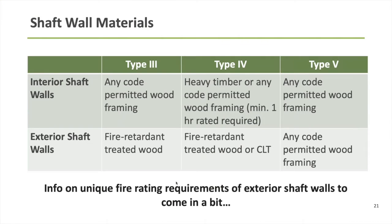There are a few nuances in the building code when it comes to exterior walls that are also shaft walls — think a hotel building where stair towers are at the far ends, where a wall is not only forming the shaft enclosure but is also an exterior wall. The code does have some unique requirements for that condition, not on a material-permitted basis, but more on what fire resistance ratings are required. We'll come back to that in just a bit.